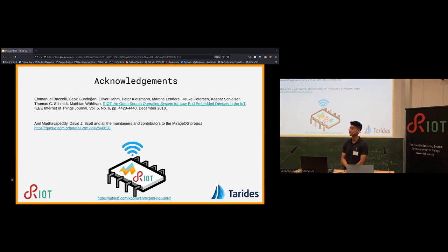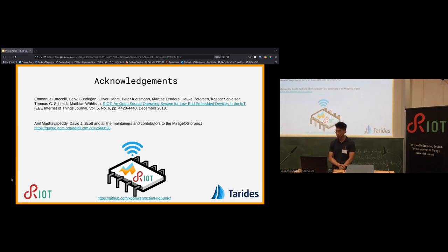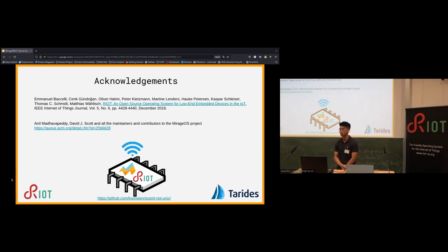Q from chat: Does OCaml always compile to runtime plus bytecode, or can it compile to native platform-specific code? A: There are two options — you can compile to bytecode or optionally compile natively as well. Q: Did you test native compilation? A: I didn't try natively. Previous work attempted it but there were issues with not having the correct make flags.